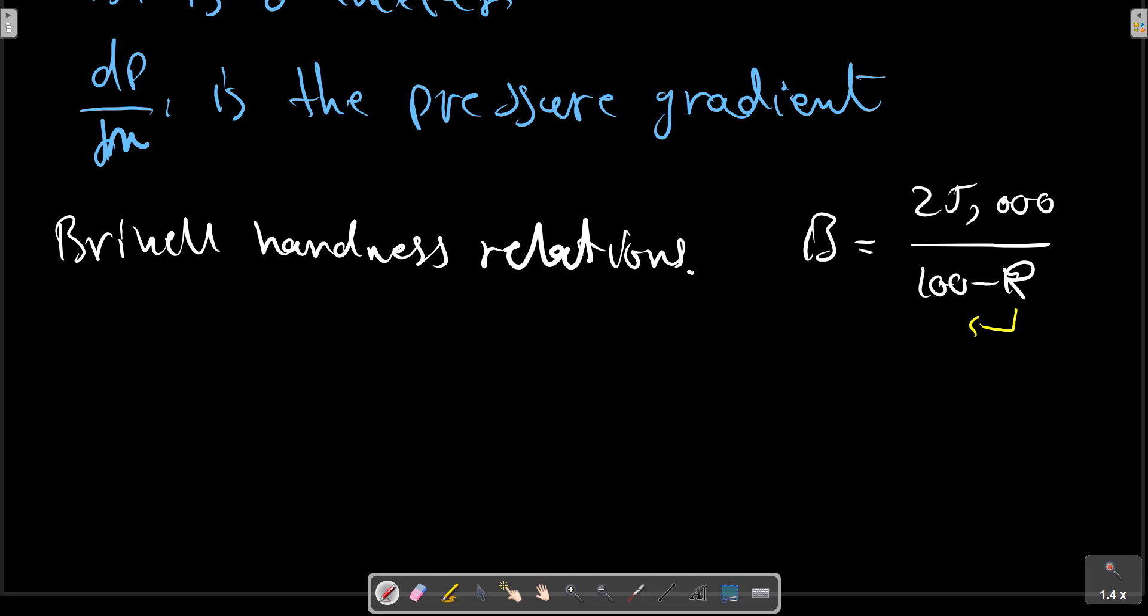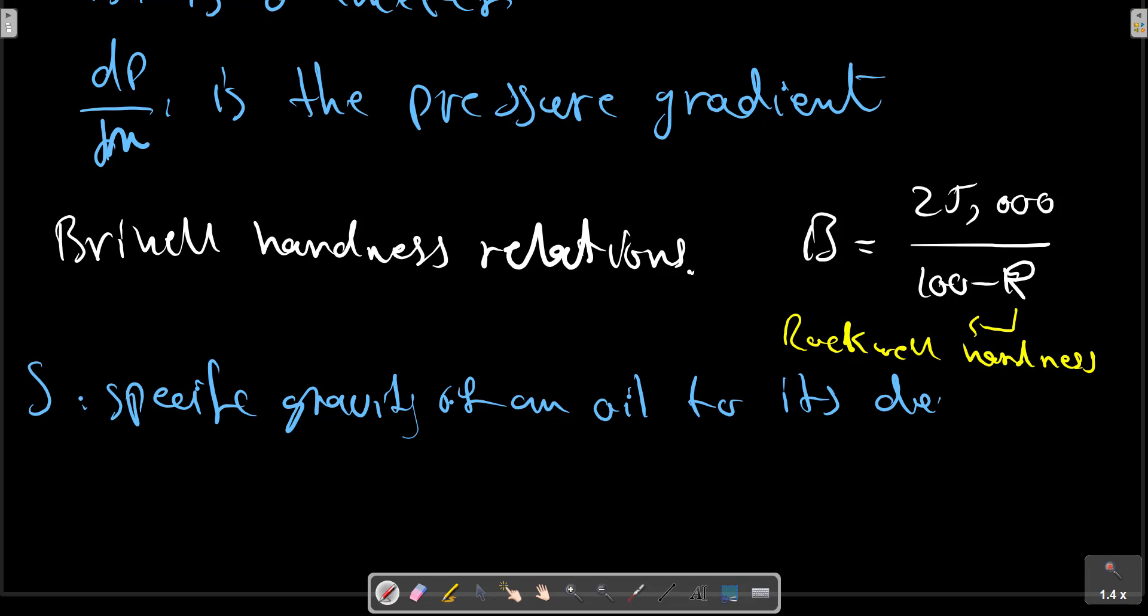Specific gravity of an oil to its density. S equals 140 divided by (130 plus API).